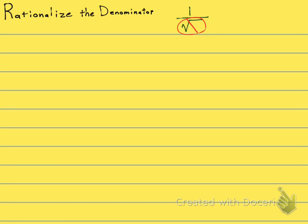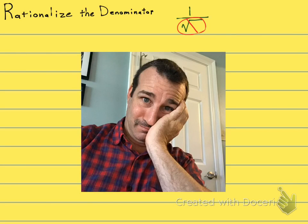Let's talk about rationalizing the denominator. This is a very popular thing to do in algebra, and there's a reason for it. Just to remind you, there are a few things that your math teacher does not like: a zero in the denominator, a negative in a radical, a fraction within a fraction. But a radical in the denominator makes your math teacher sad.